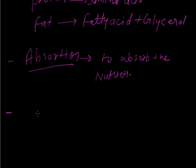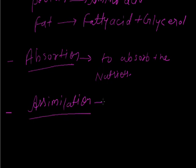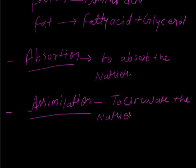After absorption, the nutrients are not only required by the absorbed part — they are required by the entire body. They must be circulated to each and every cell, every part of the body. Just as coal from a mine must be distributed everywhere, nutrients move to every part of the body. This process is known as assimilation — the process of circulating the nutrients.